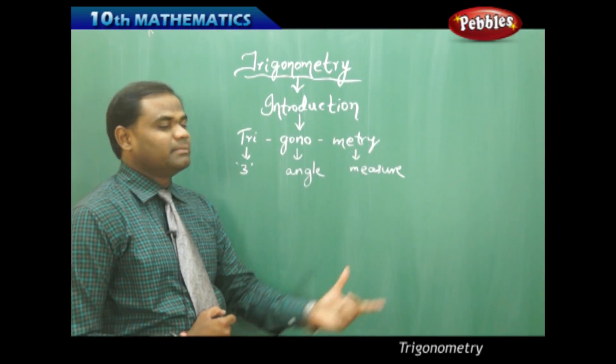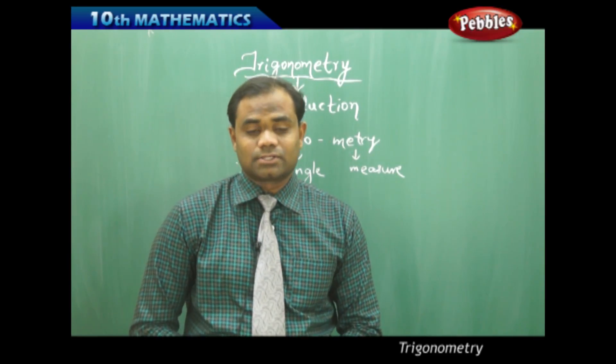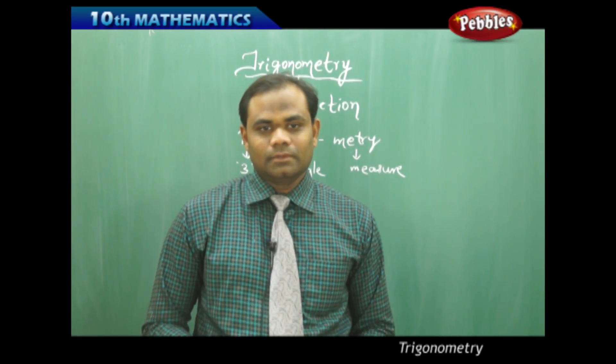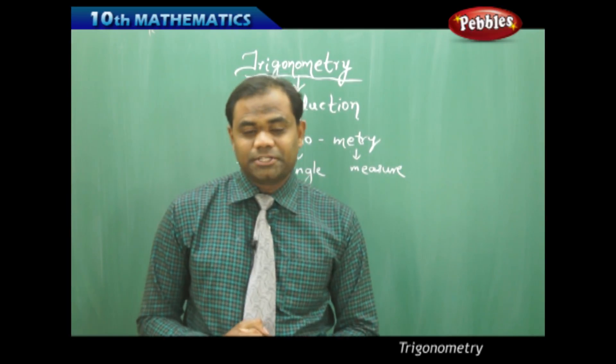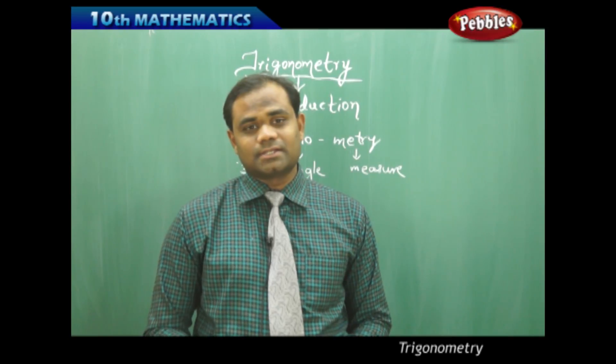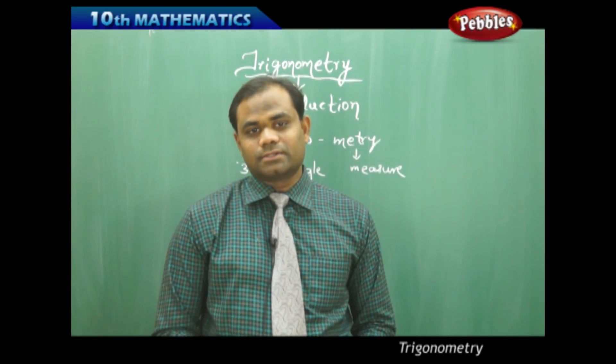Tri is three, gono is angle, and metric is measure. Measure of three angles of a triangle is called trigonometry. So trigonometry split as tri-gono-metry is measure of three sides or measure of three angles of a triangle.